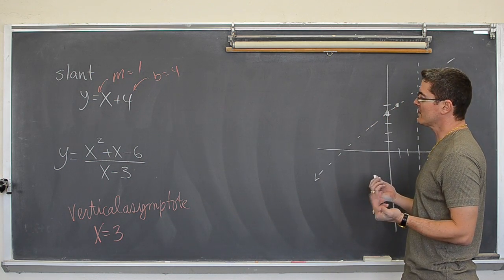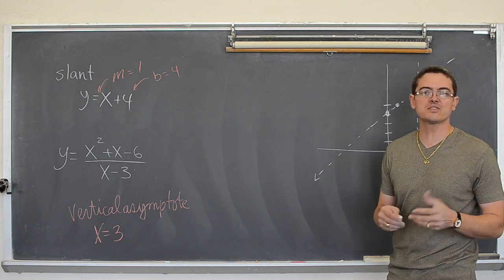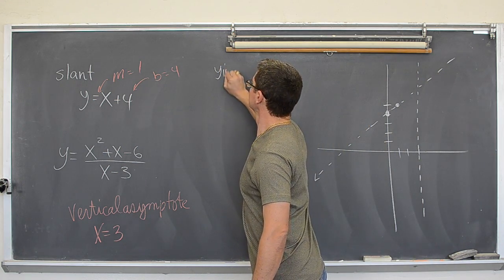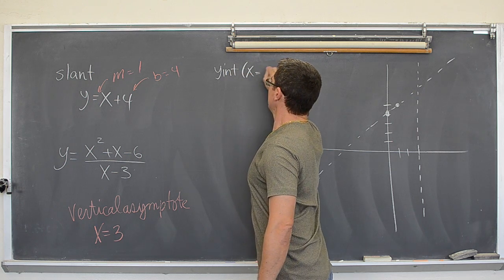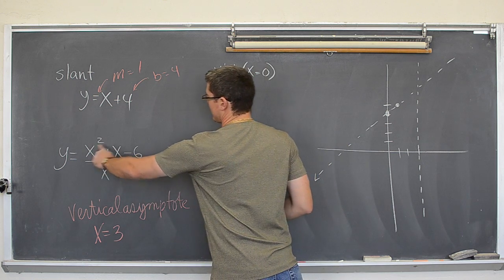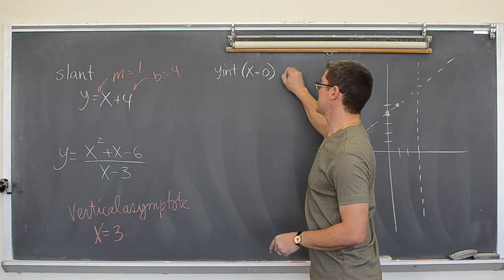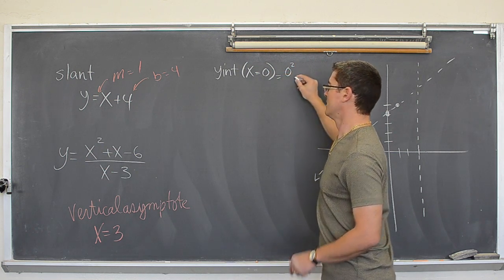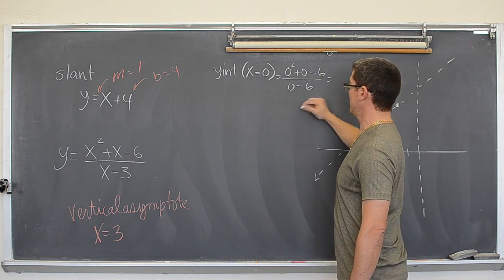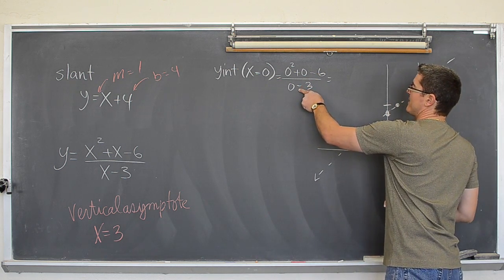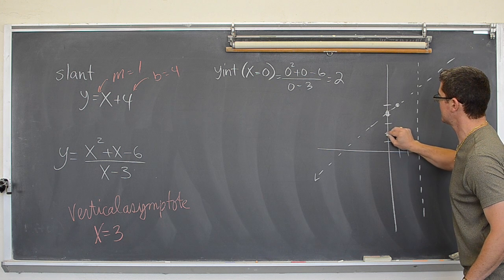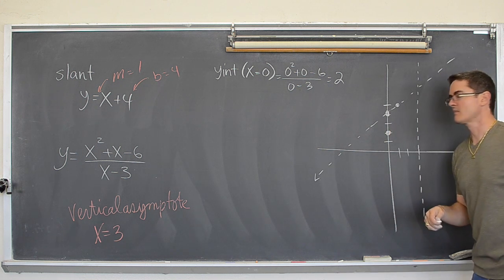We have got, let's find the y intercept. That is a good point to find when you are graphing. So, the y intercept is found when x equals 0. So, if I take this function and I plug in 0, we are going to have 0 squared plus 0 minus 6 over 0 minus 3. And negative 6 divided by negative 3 is 2. So, this graph is going to cross the y axis at 2.